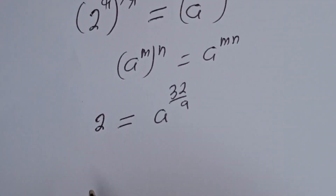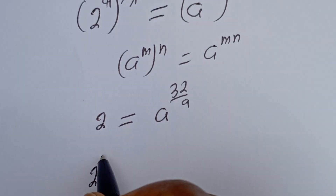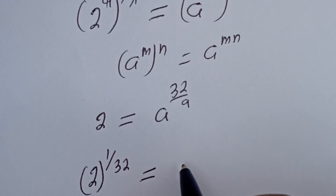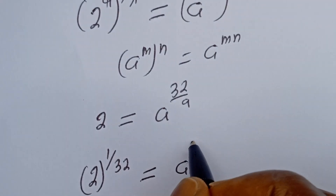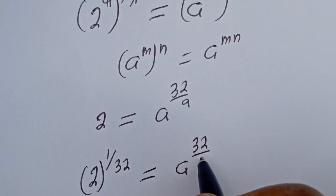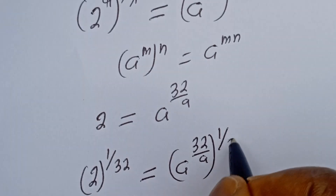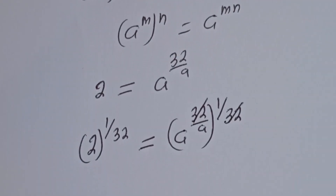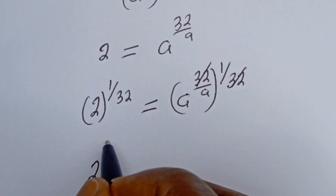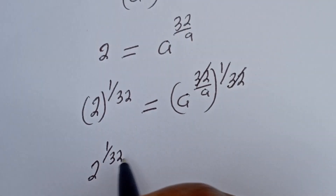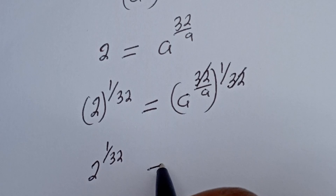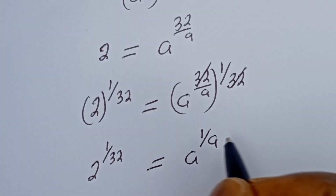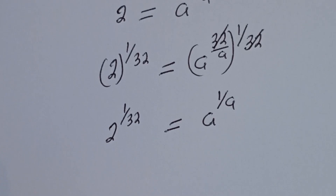Then also, let's multiply the exponent of both sides by 1 over 32 in order to eliminate this. We have 2 to the power of 1 over 32 is equal to a to the power of 32 over a, to the power of 1 over 32. This will cancel, giving us 2 to the power of 1 over 32 is equal to a to the power of 1 over a.